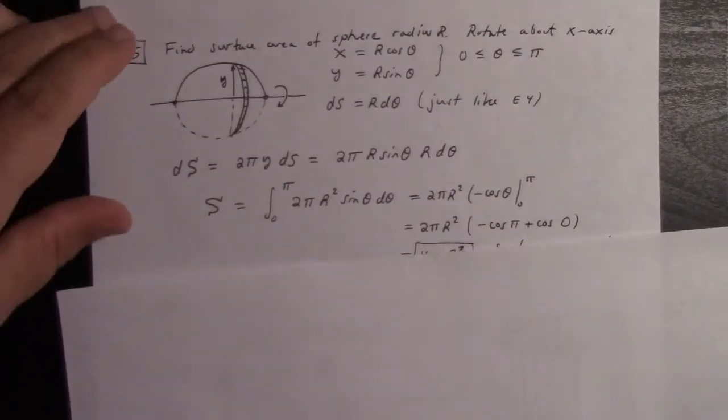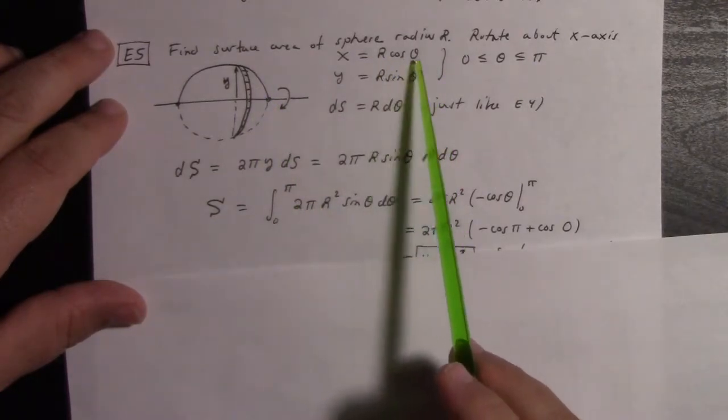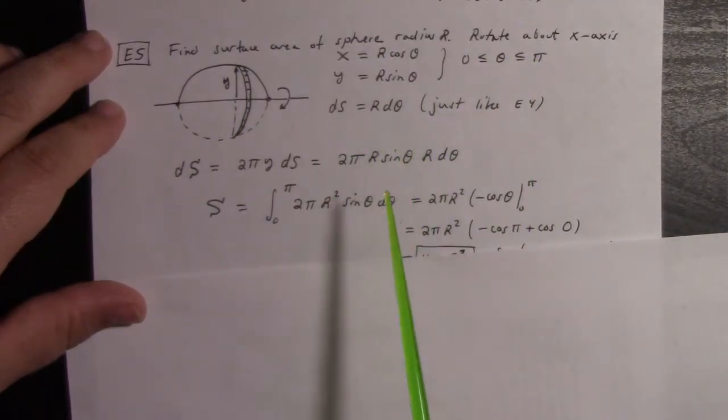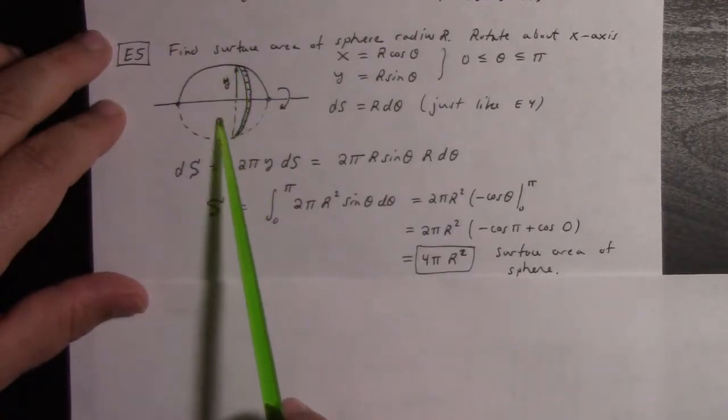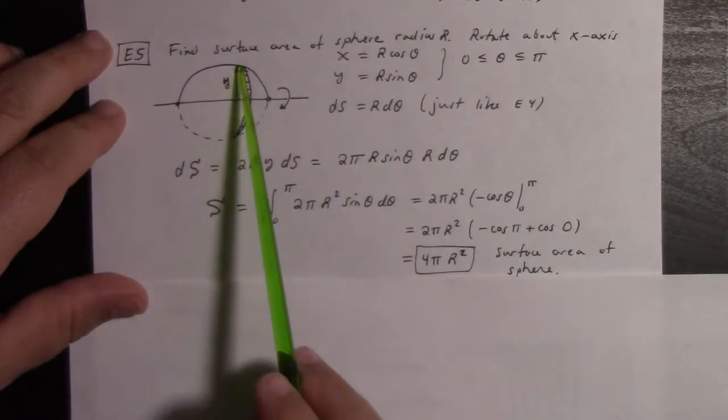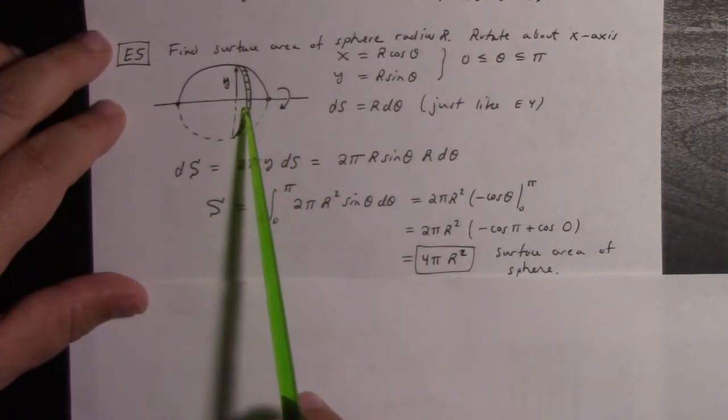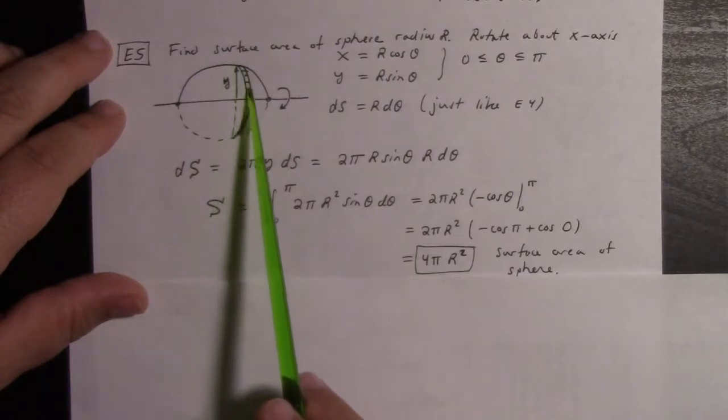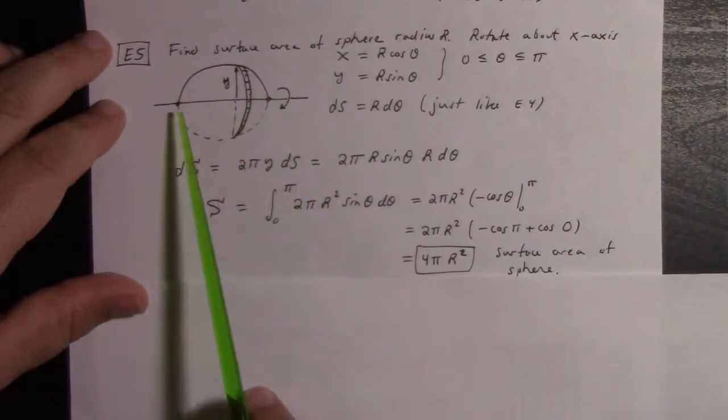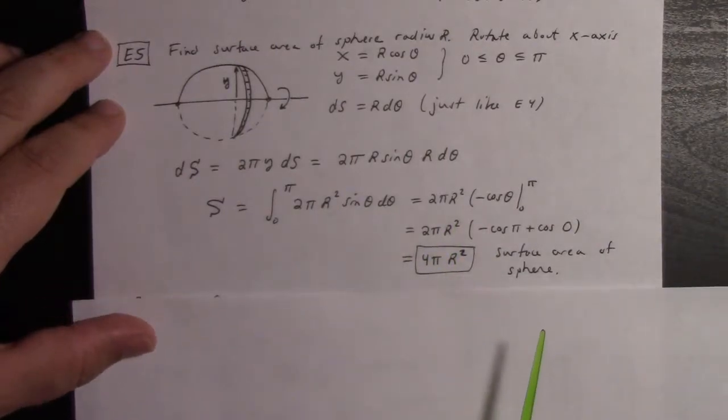In similar fashion, we can calculate the surface area of a sphere by rotating the half circle around the x-axis. We have parametrization x = r cos(θ), y = r sin(θ) between 0 and π. Again, ds is r dθ. To calculate the surface area of a ribbon, we have 2πy times ds. The circumference times the width gives the little surface area of that strip. If we add those up from 0 to π, that gives the surface area of the whole sphere. We get 4πr² is the surface area of a sphere.